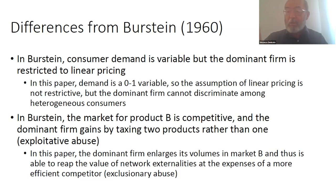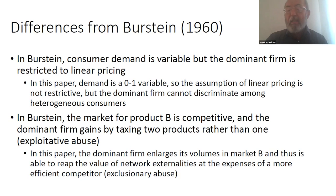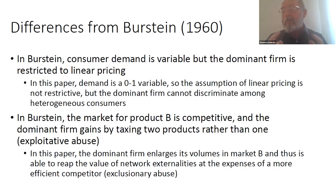Bestin was actually the first to put forward this type of unexploited consumer surplus mechanism. Bestin has a model where consumers have variable demand, and the reason why the dominant firm cannot fully extract the surplus is that it is restricted to linear pricing. Here instead we have a model with discrete demand — so linear pricing is not restricted per se — but what you assume is that the dominant firm cannot price discriminate perfectly. In this aspect I'd say the differences with Bestin are minor.